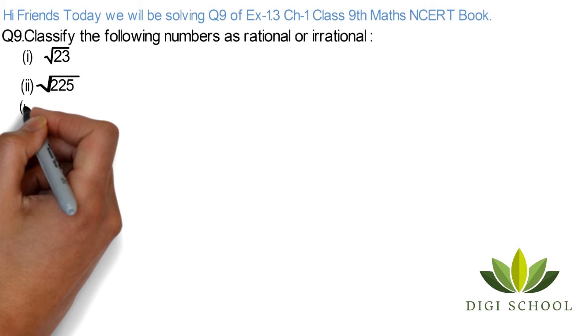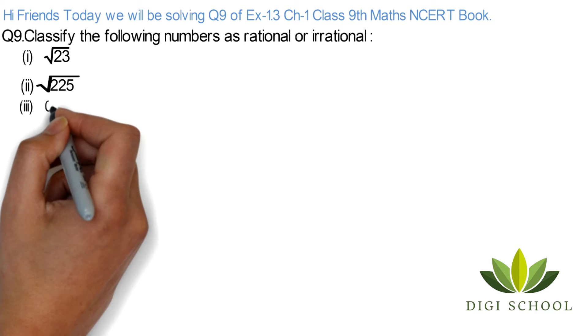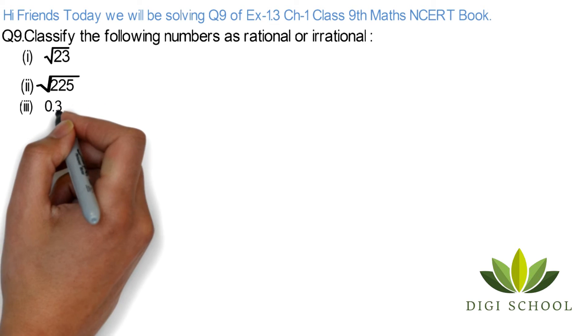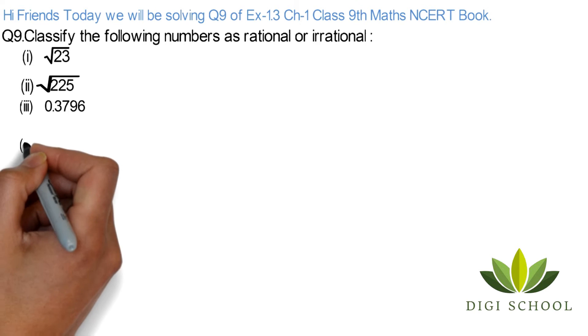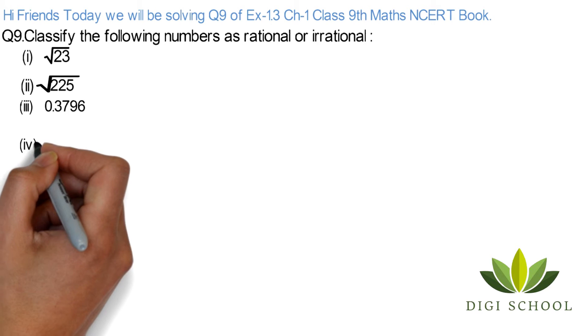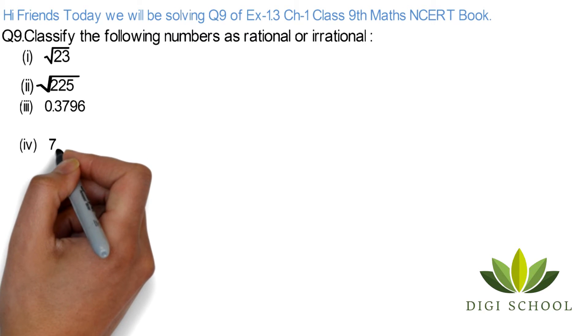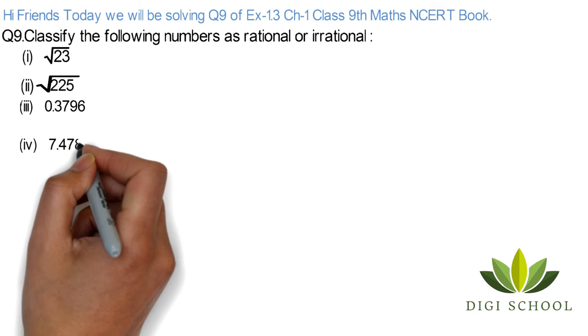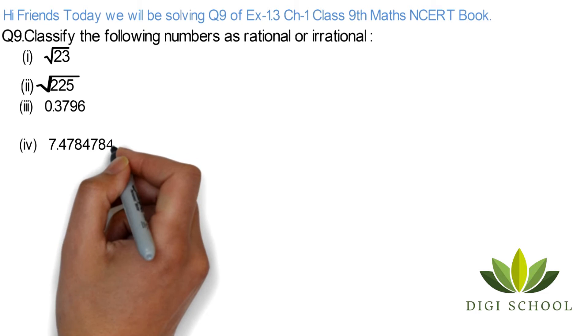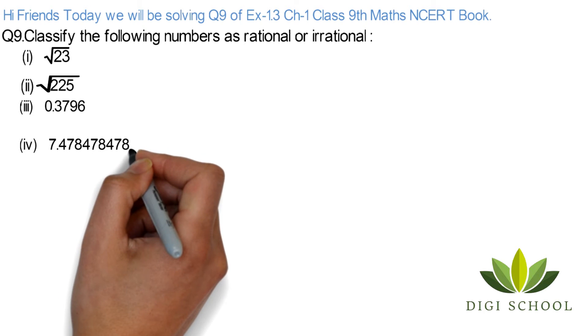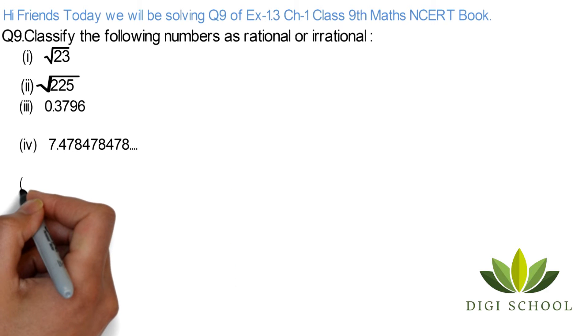Third one is 0.3796. Fourth one is 7.478478 and this continues, so we can say 7.478 bar, which means that the same number is repeated again and again.